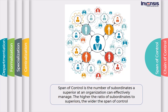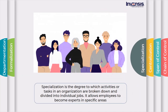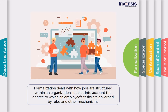Span of control is the number of subordinates a superior at an organization can effectively manage. The higher the ratio of subordinates to superiors, the wider the span of control. Chain of control is a direct lineage, whereas the span of control is widespread, that can reach across teams and departments. Centralization: if decision-making power is concentrated at a single point or by a single person, then it is called centralized organizational structure and this procedure is called centralization. Specialization is the degree to which responsibilities, activities, or tasks in an organization are broken down and divided into individual jobs. It allows employees to become experts in their own specific areas. Formalization deals with how jobs and roles are structured within an organization. It takes into account the degree to which an employee's tasks are governed by rules and other mechanisms.